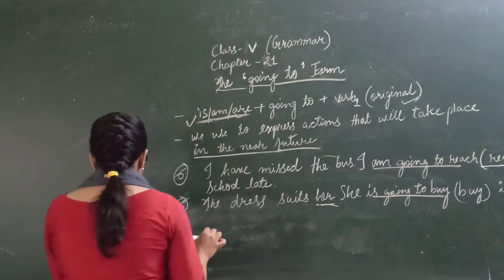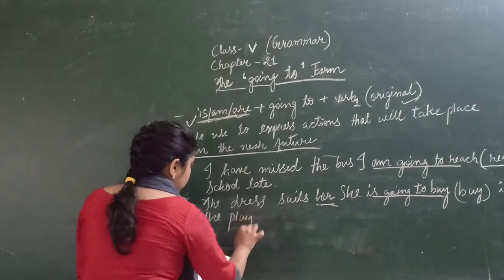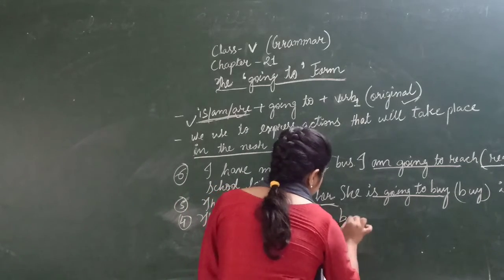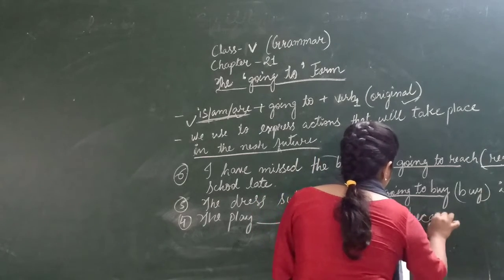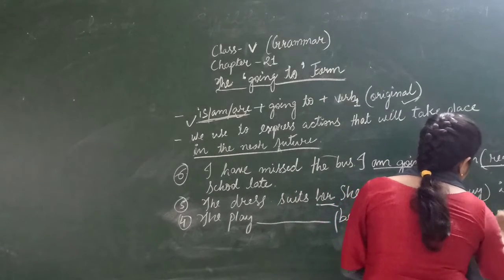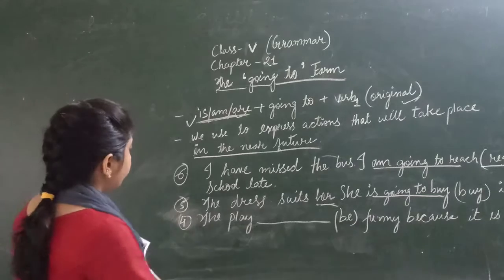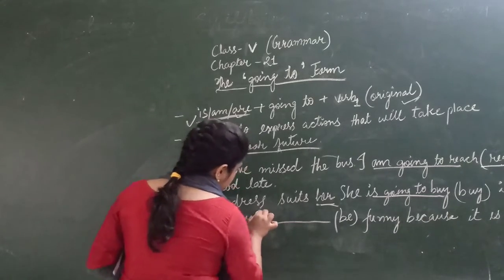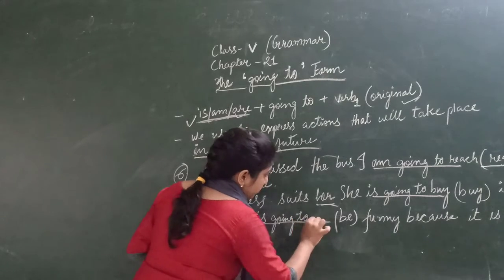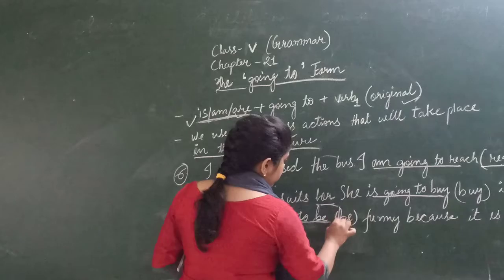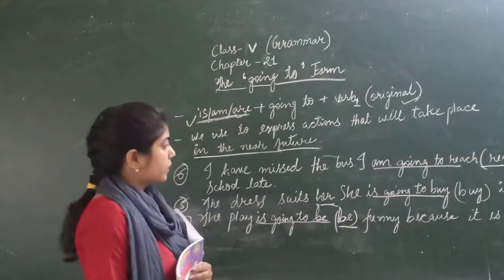The next example, question number 4: The play blank be funny, because it is a comedy. The verb given is be. The play is singular, so we use is. So the answer is: the play is going to be funny, because it is a comedy.